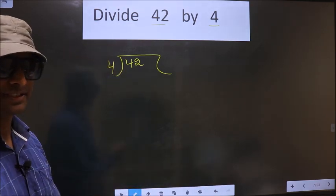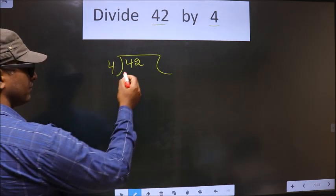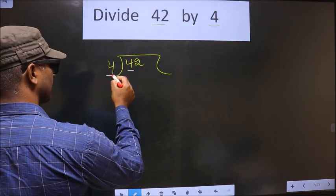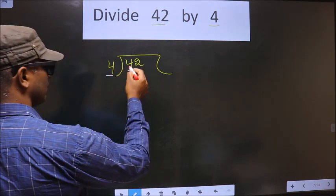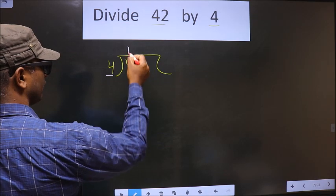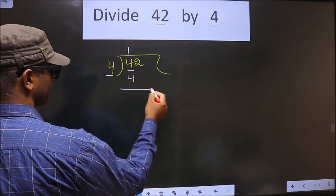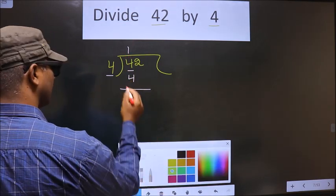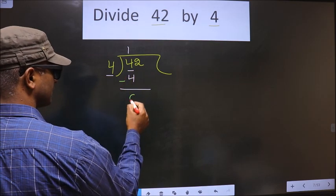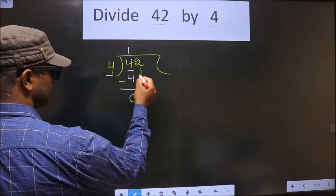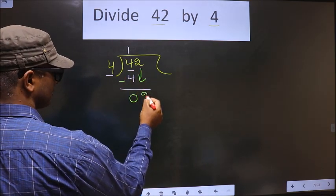Okay, next. Now, here we have 4. Here also we have 4. When do we get 4 in the 4 table? 4 once is 4. Now you subtract, you get 0. Now you bring this number down, that is 2.